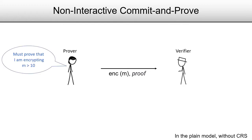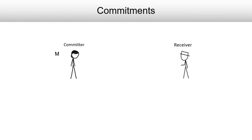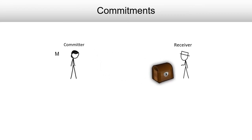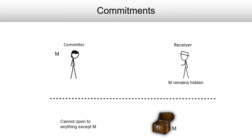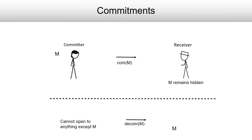The functionality that we need is a commitment. A commitment allows a committer who has some secret input M to put this message M inside a box, lock the box, and pass it on to a receiver. Later, the committer can send a key using which the receiver can open this box and recover the message. Note that once the box is sent, the committer cannot change the contents of the box and can only later send a key to open it. In a commitment, the committer and receiver run a commit phase at the end of which they obtain a transcript. This transcript commits the committer to a message without revealing to the receiver what this message is.